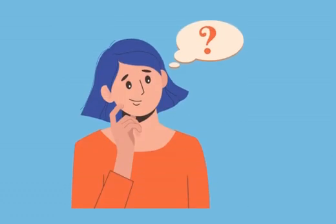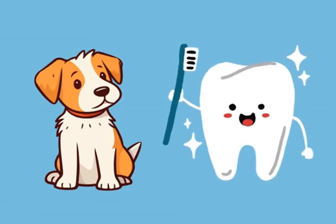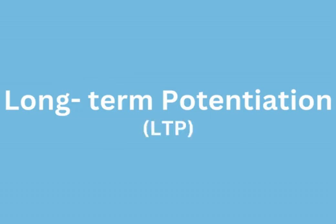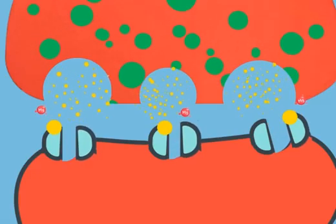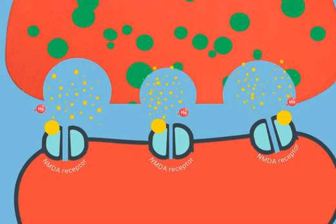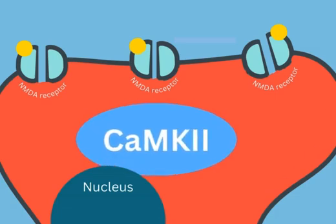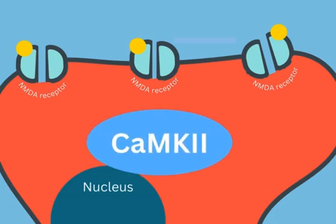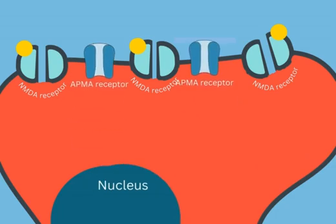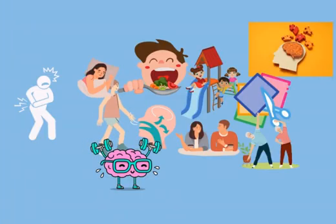Think back to your favorite childhood memory — maybe when you got your first puppy, or when you lost your first tooth. Long-term memories are the result of a cellular phenomenon called long-term potentiation, or LTP. The opening of NMDA receptors, a particular type of glutamate receptor, results in an increase in calcium entry into the cell. Calcium ions activate the protein calcium calmodulin-dependent protein kinase 2, which plays a large role in LTP through increased trafficking of AMPA receptors to the cell surface and the activation of CREB.